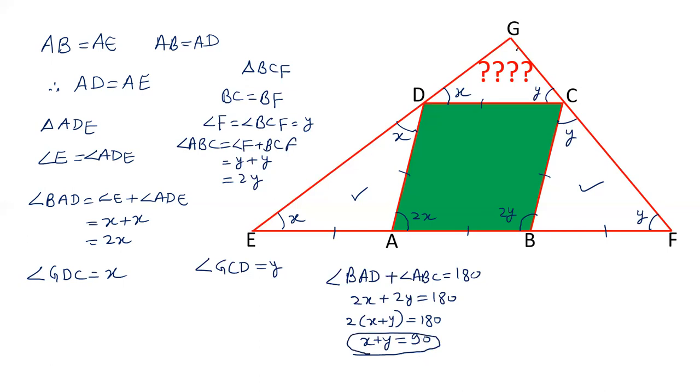Now let's move to triangle GDC. In triangle GDC, there are three angles. Angle G plus angle GDC plus angle GCD equals 180 by angle sum property. Angle GDC is X, angle GCD is Y. So angle G plus X plus Y equals 180. We just calculated X plus Y equals 90 degrees. And therefore, angle G is 180 minus 90, which is 90 degrees.